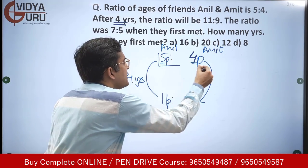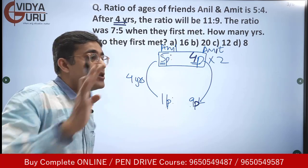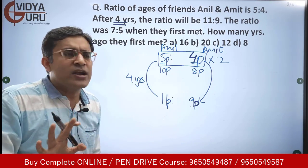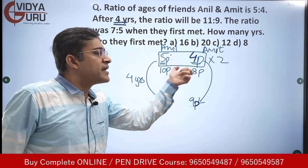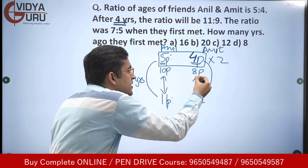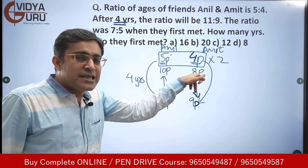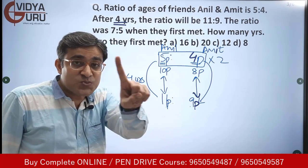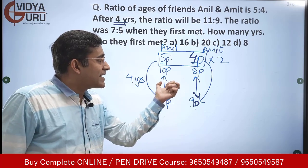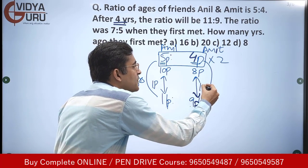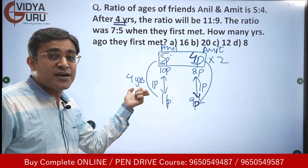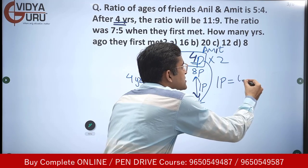So let's multiply the current ratio by two. Five to four becomes ten to eight — same ratio, new form. Now Amit's age increases from eight parts to nine parts, a change of one part. Anil's age increases from ten parts to eleven parts, also one part. The change is now the same for both boys. One part has changed in four years, so one part equals four years.